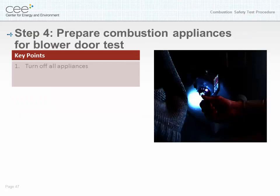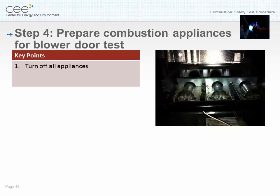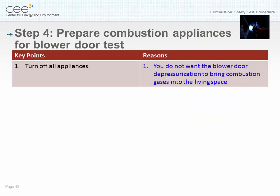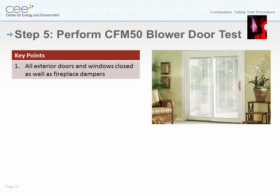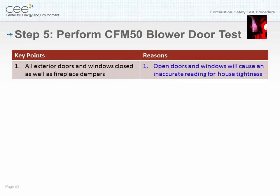Step four: prepare combustion appliances for blower door test. Key point: turn off all appliances. Reasoning: you do not want the blower door depressurization to bring combustion gases into the living space. Step five: perform the CFM 50 blower door test. Key points: all exterior doors and windows are closed as well as fireplace dampers. Reasoning: open doors and windows will cause an inaccurate reading for house tightness.